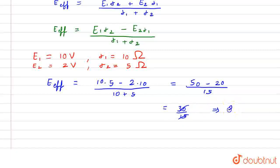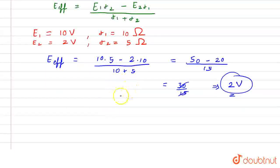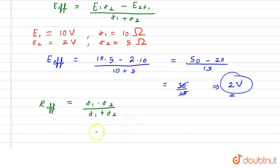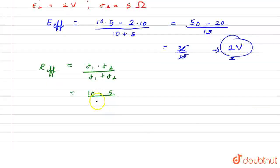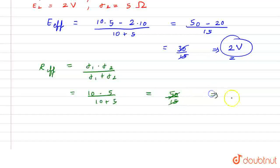Now, to find R effective we can write R effective equals R1 times R2 divided by R1 plus R2. So here the value is 10 times 5 divided by 10 plus 5 which equals 50 divided by 15. By simplifying we get the value of R effective is 3.33 ohm.